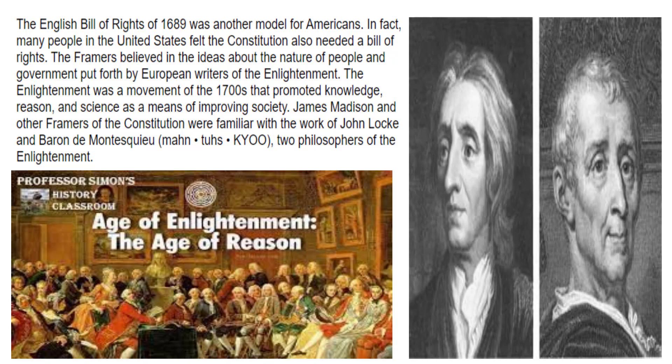Question five: How did the English Bill of Rights of 1689 influence the Constitution? It was another example of the concept that people deserve to have their basic rights protected by the government. Many people asked for those rights to be included in the original Constitution, and while they weren't originally included, they were added very quickly afterwards in what are called the First Ten Amendments, known as the Bill of Rights. Question six: What was the Enlightenment? The Enlightenment was a movement of the 1700s that, instead of focusing on superstitions, promoted knowledge, reason, and science as a way of making everyone's lives better.